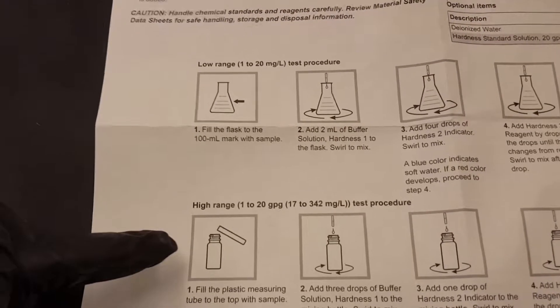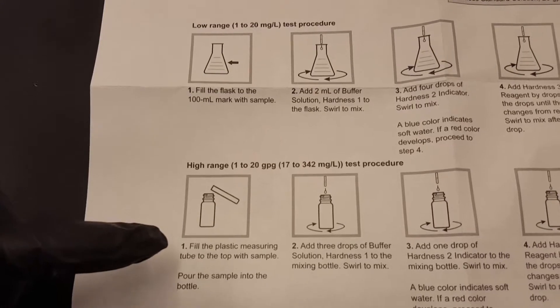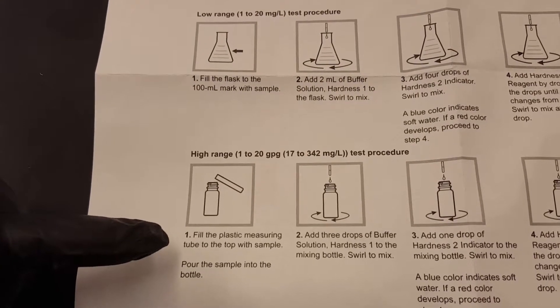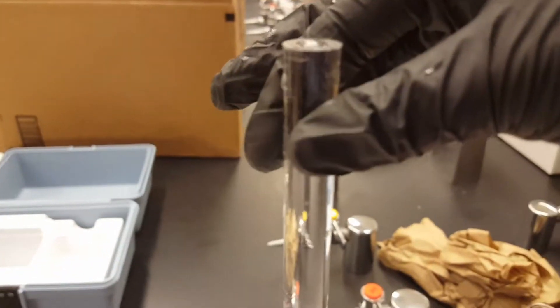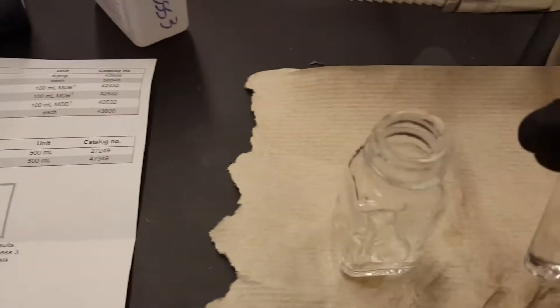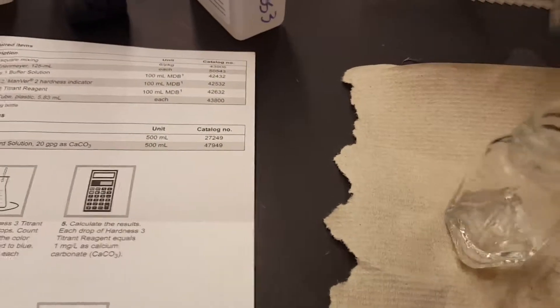We're only going to do the high range because we have very hard tap water here in San Bernardino. So the first step it says fill the plastic measuring tube to the top with sample. It comes with a little tiny tube like a little cylinder. Fill it to the top with tap water or creek water depending on what you are testing. Pour it right into this little container.